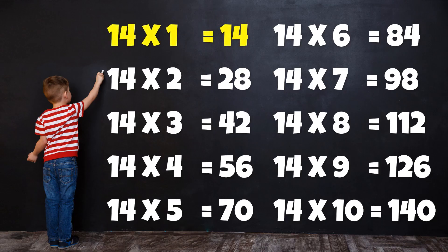Table of 14: 14×1=14, 14×2=28, 14×3=42, 14×4=56, 14×5=70, 14×6=84, 14×7=98, 14×8=112, 14×9=126, 14×10=140.